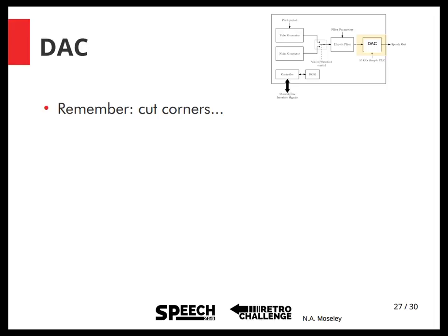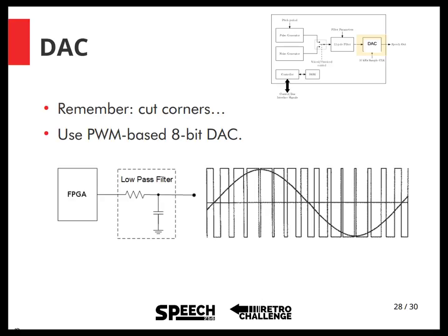Remember when I said I was going to cut corners? One of the ways to cut corners is in the digital-to-analog converter. What I'm going to use as a first implementation is a very simple 8-bit pulse-width-modulated based digital-to-analog converter — a counter and a comparator that generates a 1-bit output pulse. After low-pass filtering it with a resistor and a capacitor, you hopefully end up with something that looks like the signal you want to generate. In practice this has quite a lot of distortion, but since the speech synthesis engine isn't completely noise-free, I don't think it'll really matter.